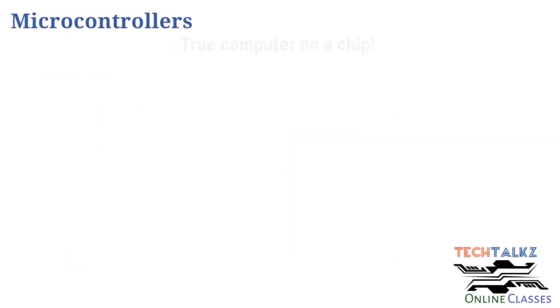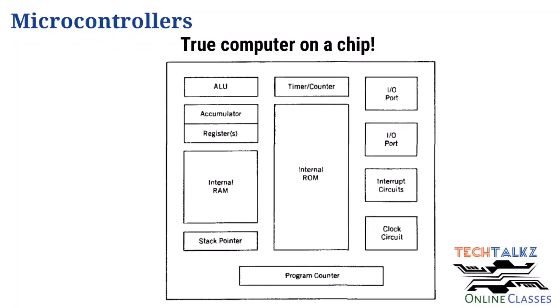Microcontrollers are known as a true computer or a system on a chip. Because internally, there is memory — RAM and ROM — available, and ports are available. Looking at the block diagram of a general microcontroller, internal ROM and RAM are available.